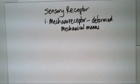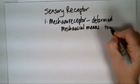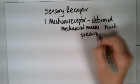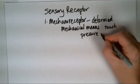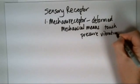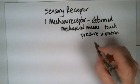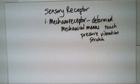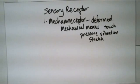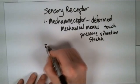This is deformation by mechanical means, and by that I mean by a physical change. That could be touch, it could be pressure, it could be vibration, it could be stretching. Any of those things that would deform these particular receptors cause them to change their shape, and that would cause a signal then to be sent via a sensory neuron to the central nervous system.